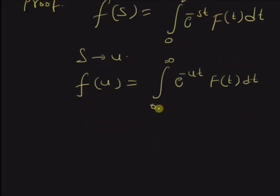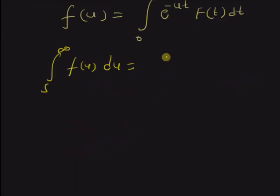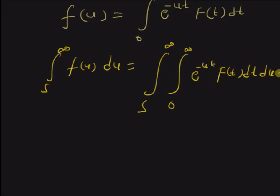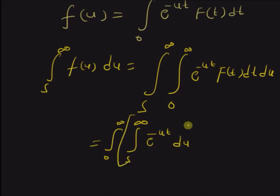Now, integrating on both sides with respect to u with the limits s to infinity, we have the integral from s to infinity of F of u du. This is equal to the integral from s to infinity and the original integral from 0 to infinity of e to the power minus u t times f of t dt du. Now, by changing the order of variables, we have the integral from 0 to infinity of the integral from s to infinity of e to the power minus u t du, and then we have f of t dt.